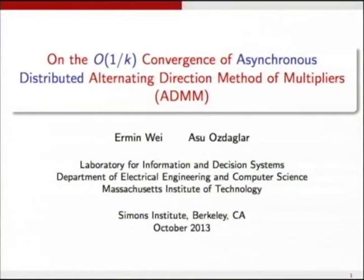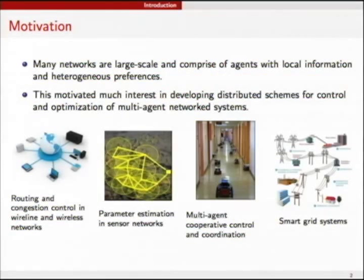So first, let's see why distributed methods are interesting, but I guess I don't have to motivate much for audience in this room. We all know today there's an explosion in data size, and it's impossible to process everything on just one node by itself. Therefore, we are working with large-scale networks with agents that have local information, or maybe heterogeneous preferences. And here are some motivating examples in communication networks, control networks, sensor networks, and even the grid.